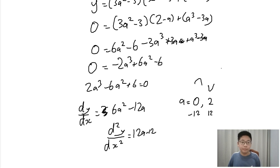So 2 times 2 cubed minus 6 times 2 squared plus 6 equals 16 minus 24 plus 6 equals minus 2. So that means this is negative and we all know the maximum is going to be positive.